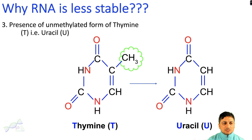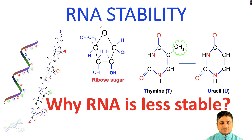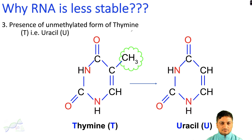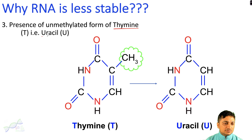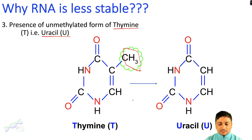The third reason why RNA is less stable compared with DNA is the presence of thymine in DNA. In the RNA molecule, thymine is replaced by uracil. Looking at the structures of thymine and uracil, if we remove the methyl group from thymine, then thymine and uracil are structurally the same.